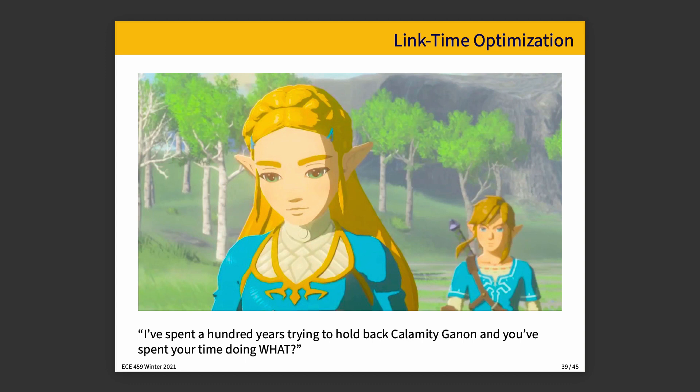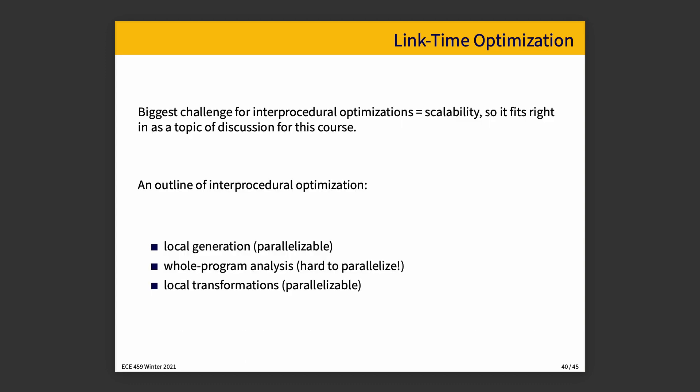We're going to talk about some of the mechanics for how we actually do link time optimization — that is to say, optimizations that happen when the program is being linked with its various libraries. The biggest challenge for this is scalability, which fits in with our discussion of the topics of this course. To give a high-level overview of interprocedural optimization: there is local generation, and that is parallelizable.